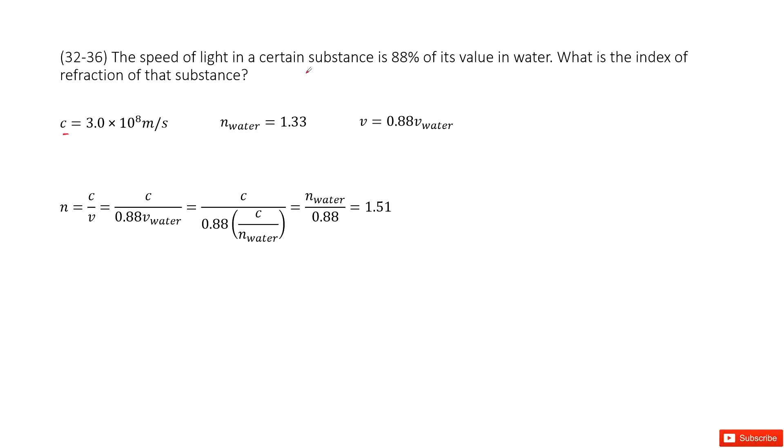We also know the speed of light in a certain substance is 88 percent of its value in water. So in this substance, the speed of light becomes 0.88 times the speed in water.